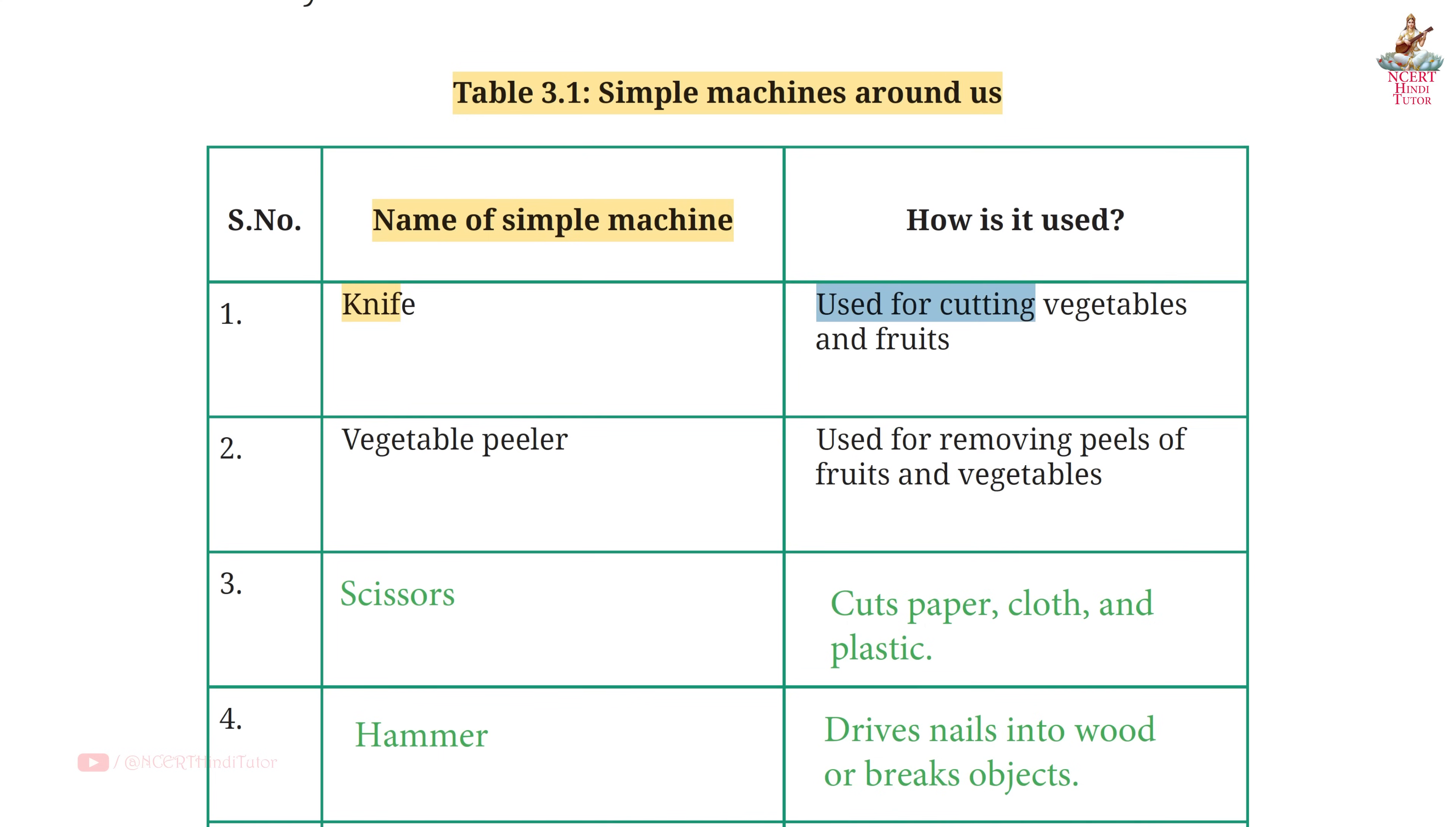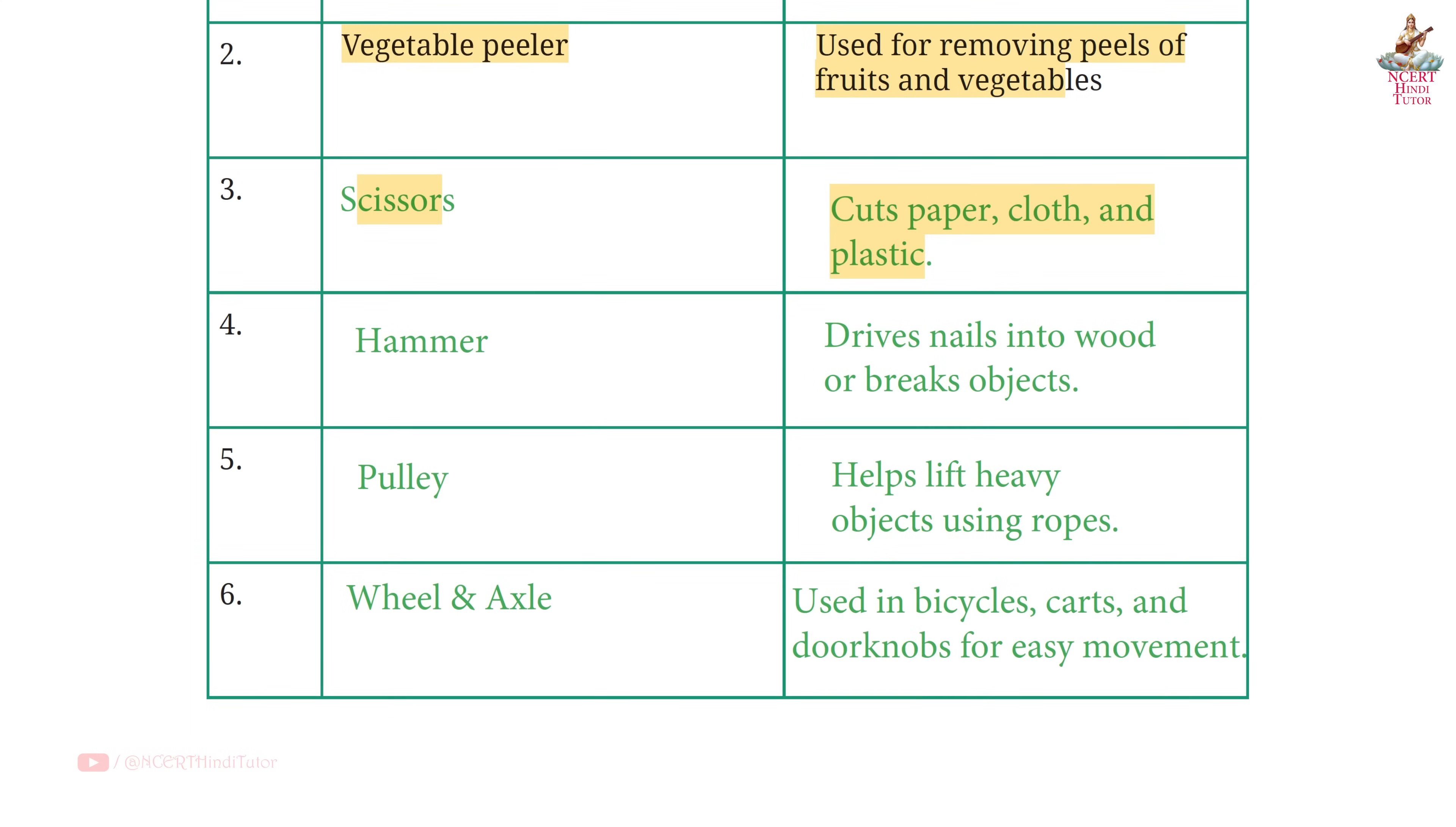Used for cutting vegetables and fruits. Second, vegetable peeler, used for removing peels of fruits and vegetables. Third, scissors, cuts paper, cloth and plastic. Fourth, hammer, drives nails into wood or breaks objects. Fifth, pulley, helps lift heavy objects using ropes. Sixth, wheel and axle, used in bicycles.